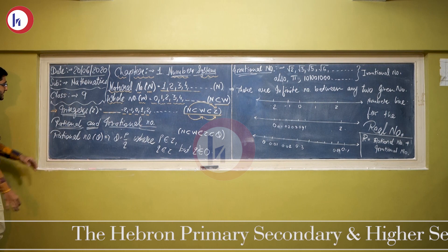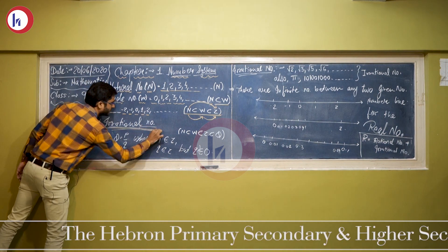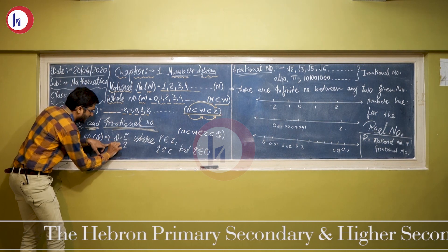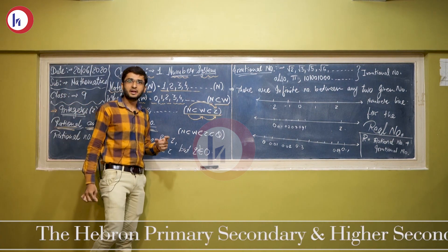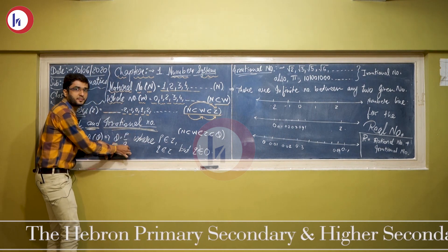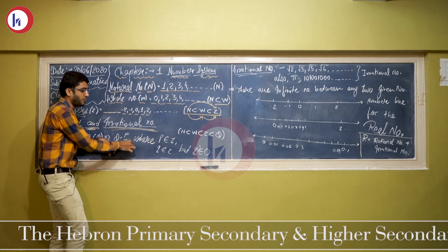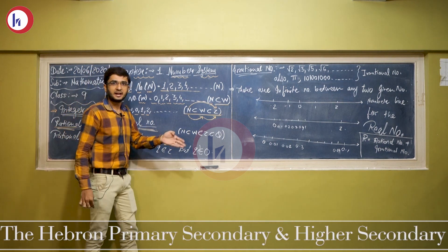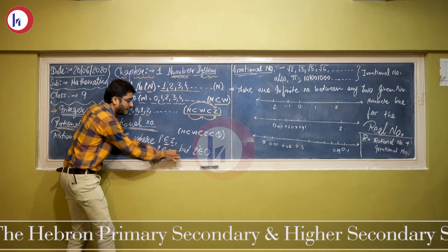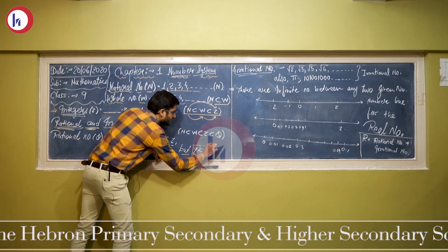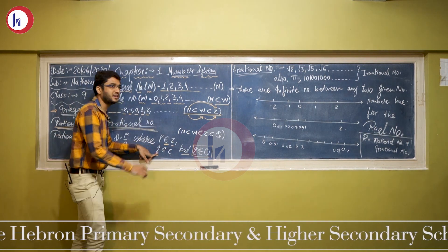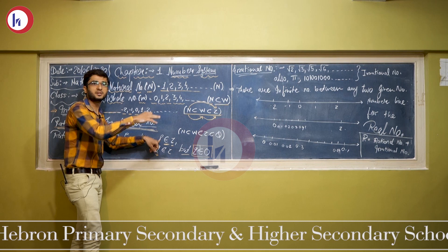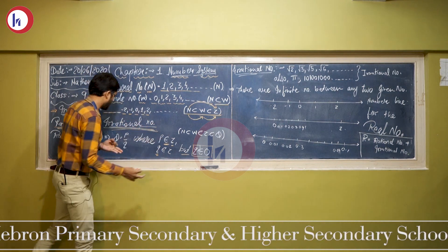The new topic for Standard 9 is rational numbers and irrational numbers. Rational numbers are indicated by the symbol Q (capital Q), and can be written in the form P upon Q, where P belongs to Z (integers) and Q also belongs to Z, but Q cannot be 0. All numbers — positive and negative — are included in Q, but P can include positive, negative, and 0.